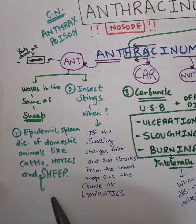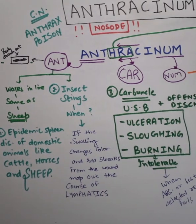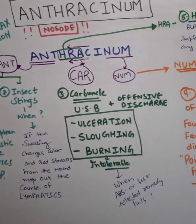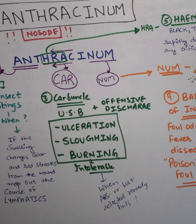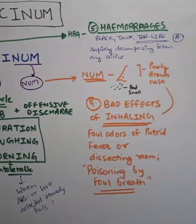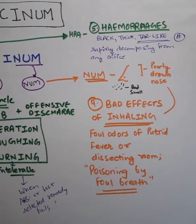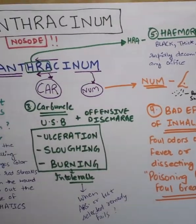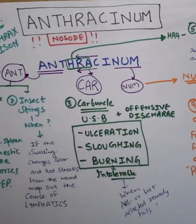To summarize: the main points of Anthracenum are epidemic spleen diseases of domestic animals, insect stings, carbuncle with offensive discharge and ulceration, sloughing and burning, bad effects of inhaling foul odors, and hemorrhages. Thank you.